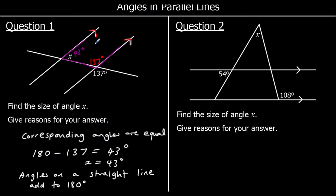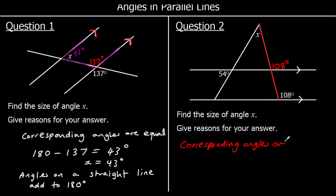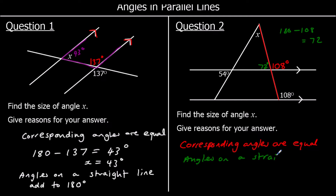Question two. In question two we've got two lines going through the parallel lines, so we can't get them mixed up. The line with the 108 on it goes through the parallel lines, so it will make the same angles at both of the lines. So 108 and this angle here are corresponding — corresponding angles are equal. Then angles on a straight line add up to 180 degrees, so 180 take away 108 is 72.